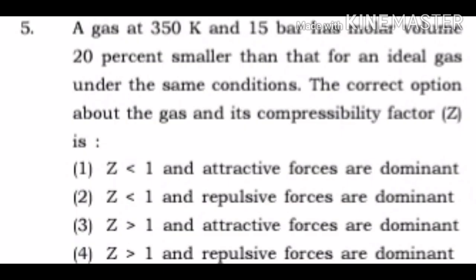Fifth question: a gas at 350 kelvin and 15 bar has molar volume 20 percent smaller than that of ideal gas under the same condition. The correct option about the gas and its compressibility factor Z is: 1) Z smaller than 1 and attractive forces are dominant, 2) Z smaller than 1 and repulsive forces are dominant, 3) Z greater than 1 and attractive forces are dominant, 4) Z greater than 1 and repulsive forces are dominant.